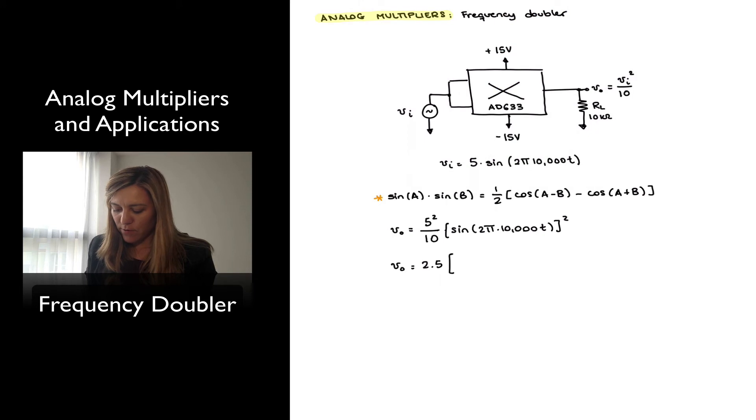And so essentially I will have sine of, or rather cosine, one-half of the cosine of A minus B, which in this case is 10,000 minus 10,000, which is 0.